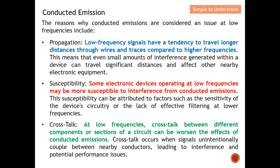Even small amounts of interference generated within a device can travel significant distances and affect nearby electronic equipment. Additionally, some electronic devices operate at low frequency and are very sensitive to interference — once conducted emission at low frequency occurs, these devices will be affected.